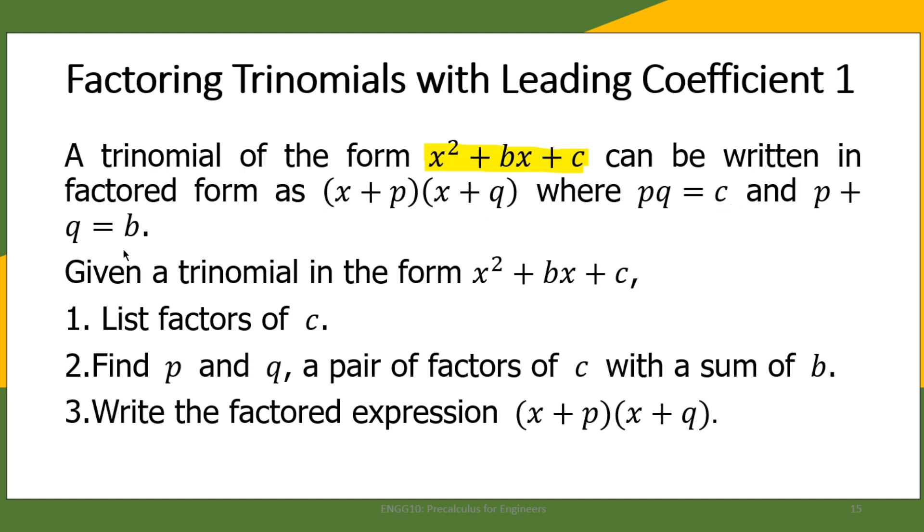This is the list of steps that we need to take when factoring trinomials like this: First, list factors of c, the constant term. Then find p and q, a pair of factors of c with sum of b. Then write the factored expression (x + p)(x + q).